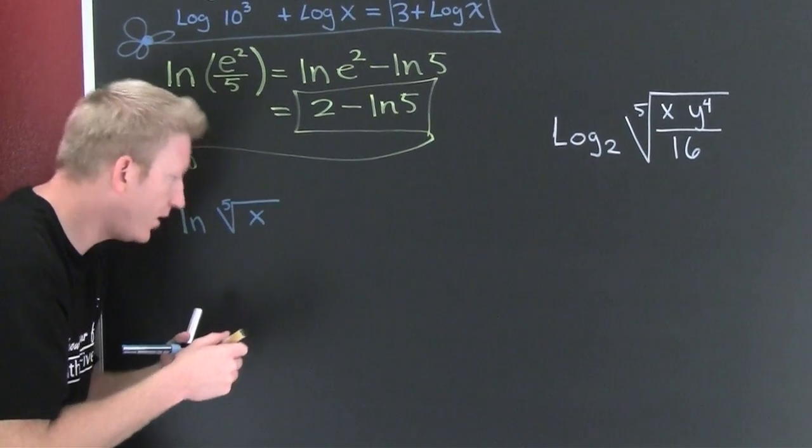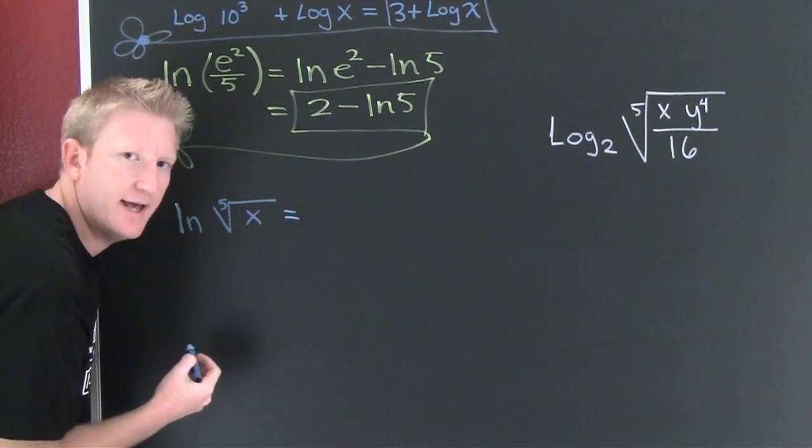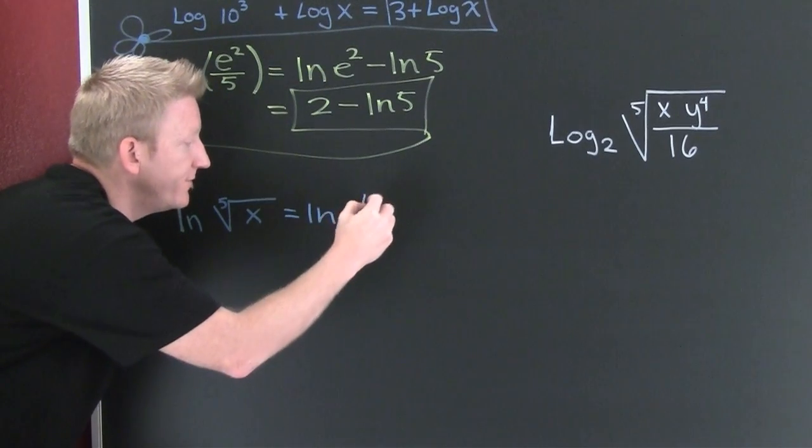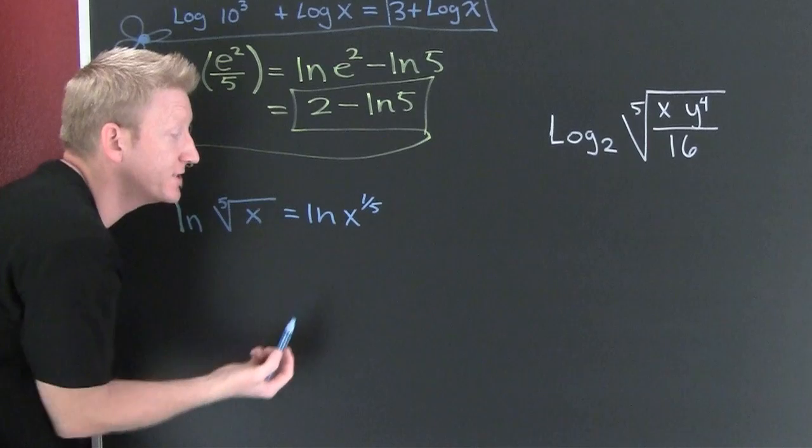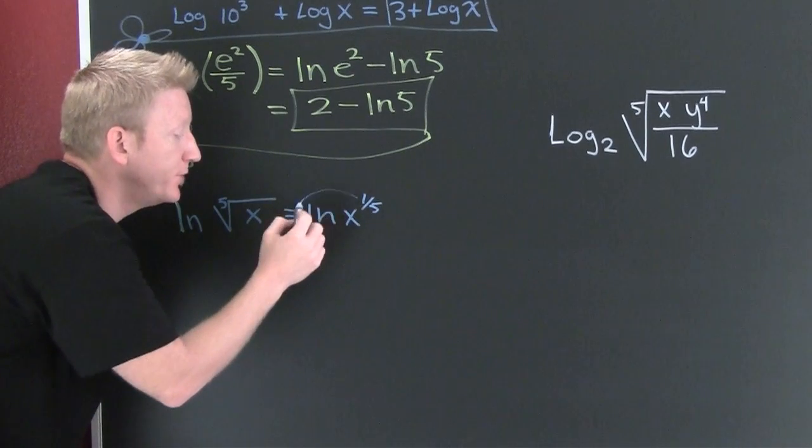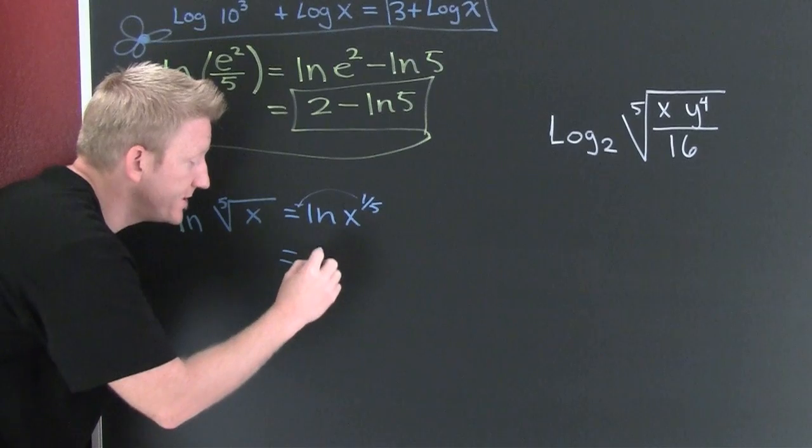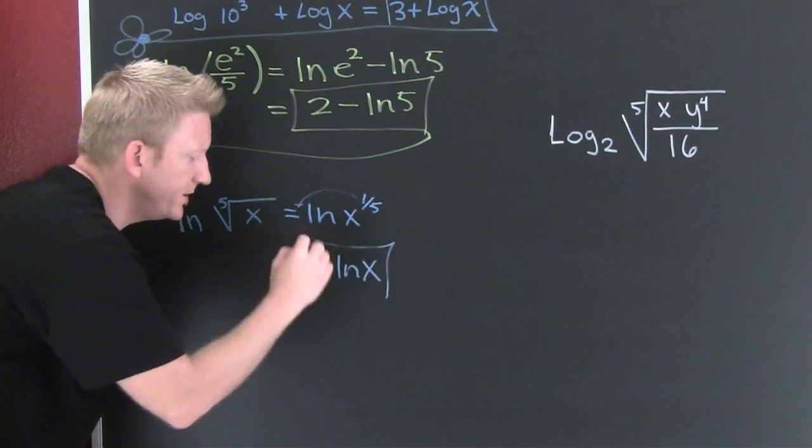Oh boy. This one needs some massage and manipulation. This is the natural log of x to the 1 fifth. So now I can use one of my special properties and bring that right on down front. So then this is 1 fifth the natural log of x.